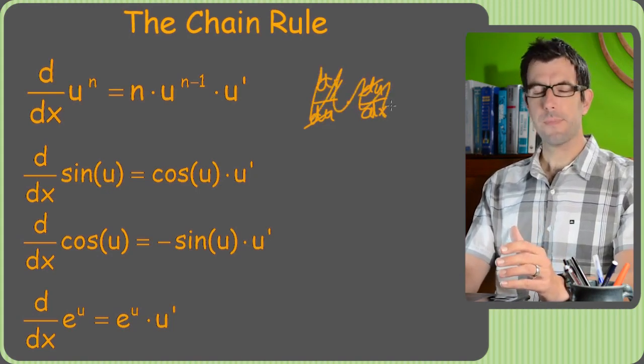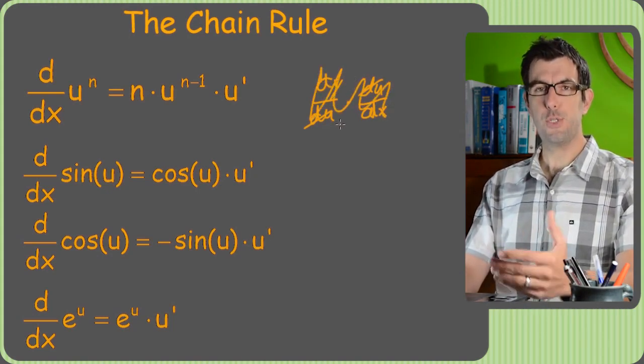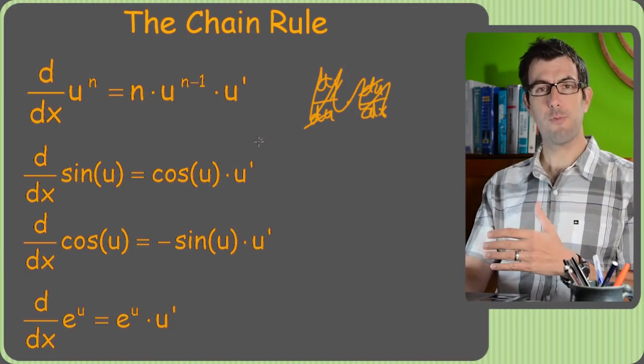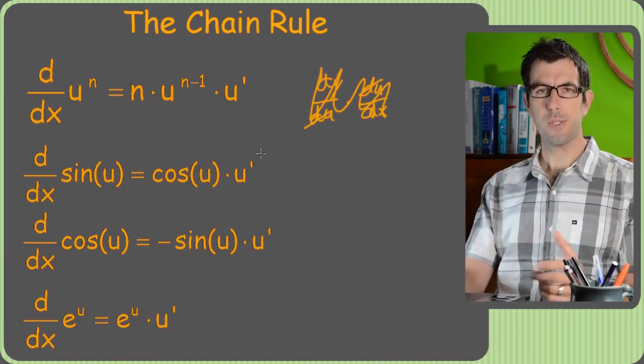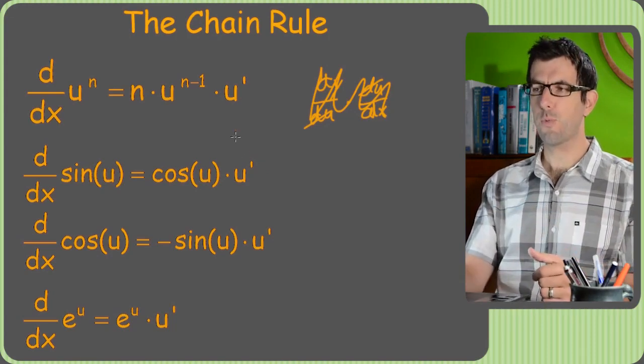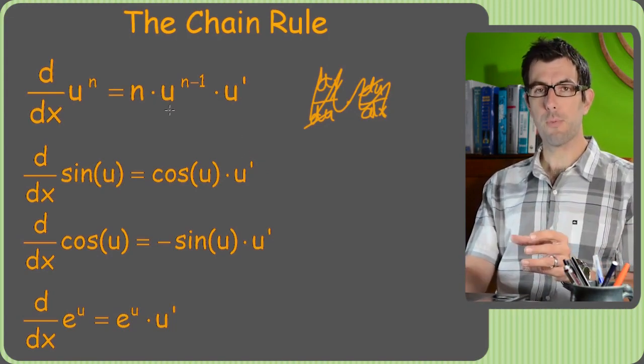But what I want you guys to see is the chain rule is just derivatives. It's the same formulas we've been using. We're just gonna throw a u prime on the end. Everything else is just in the noise. What really matters is that we're gonna throw a u prime on the end.